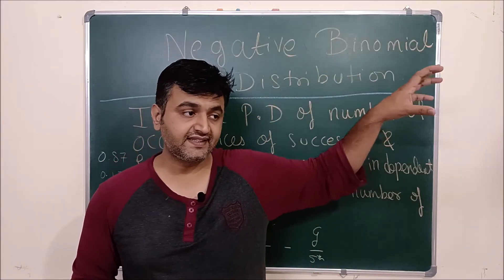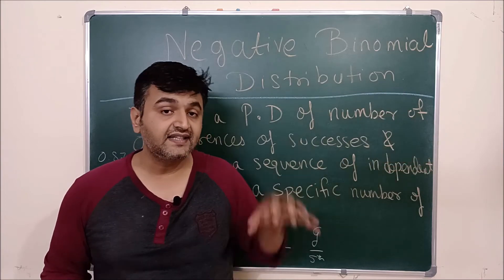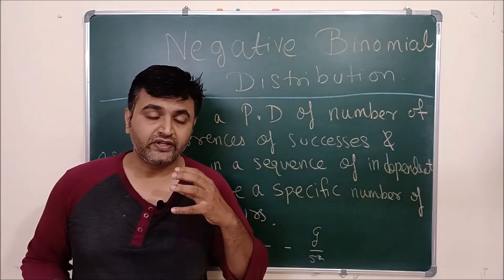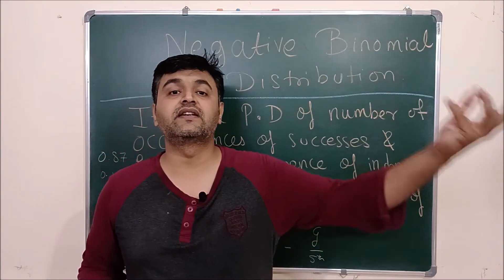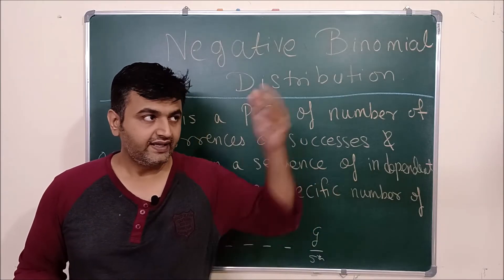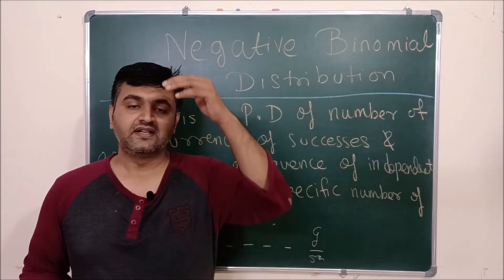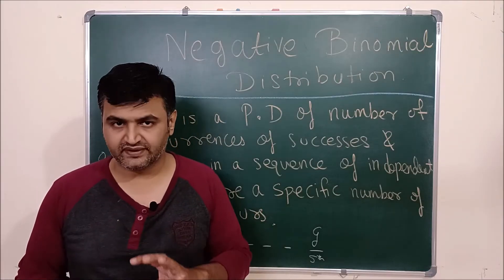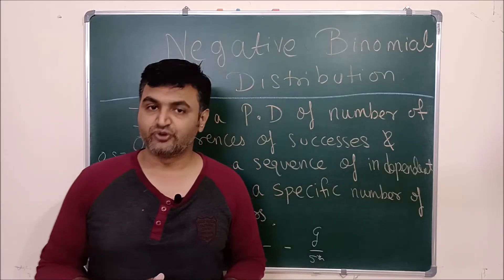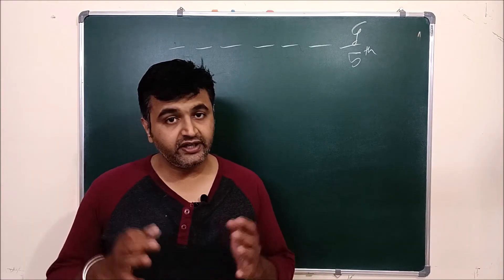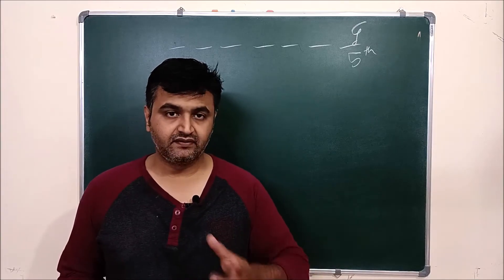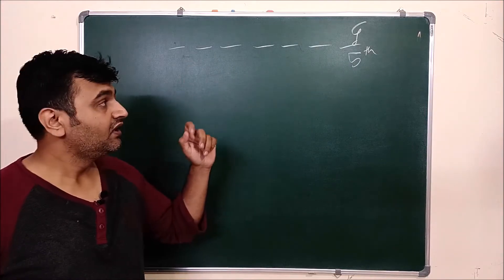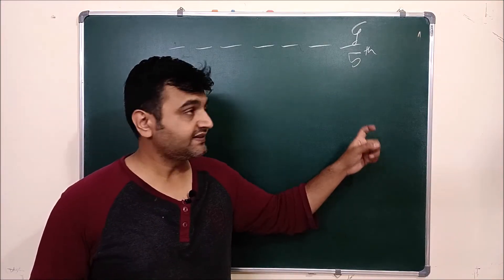In binomial you do n number of trials and find x number of successes. Here, you keep doing trials to find the probability of the xth success at the nth trial — it is the other way around. That's why the word 'negative': it's the reverse. Here you do n number of trials to find your rth success, where r is already given. So in our example, it's the 5th success at the 7th trial.